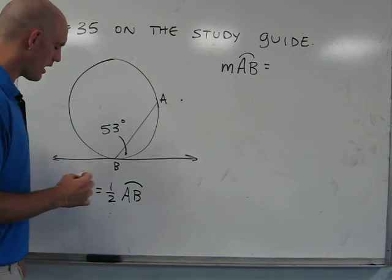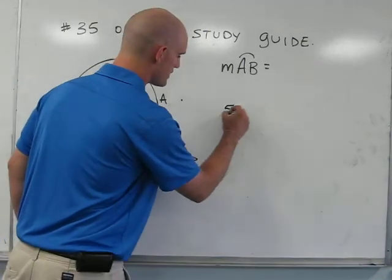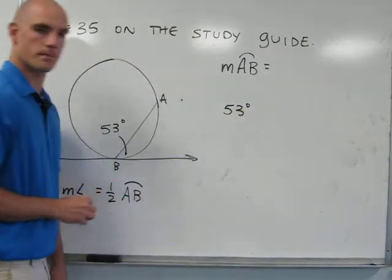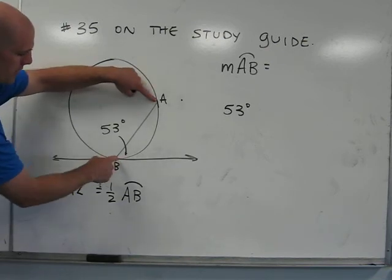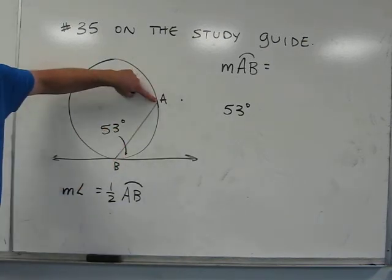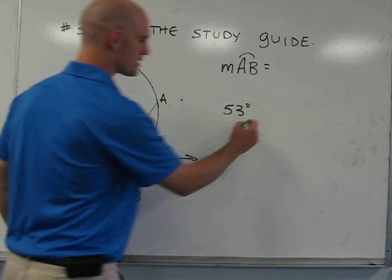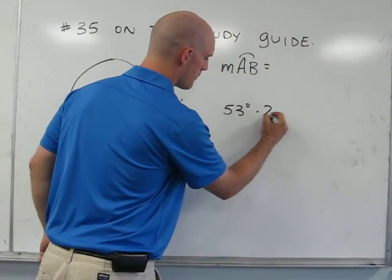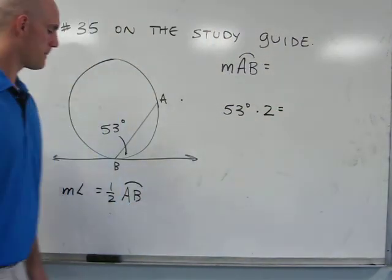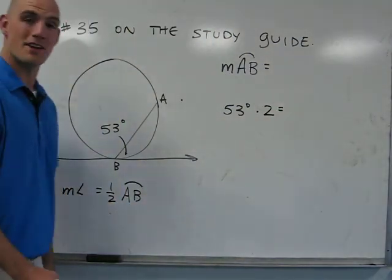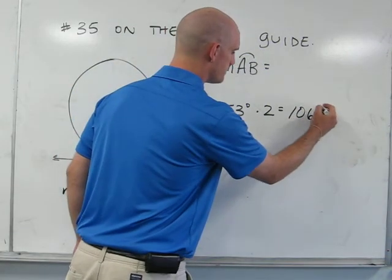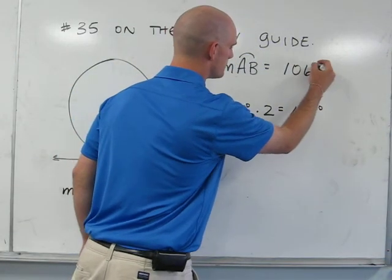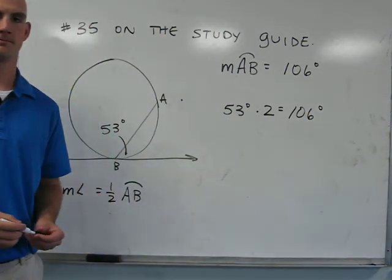So if the measure of the angle is 53 degrees, we know that's half of the measure of the arc inscribed by the angle. If we simply multiply 53 degrees by 2, we get that the measure of arc AB is 106 degrees.